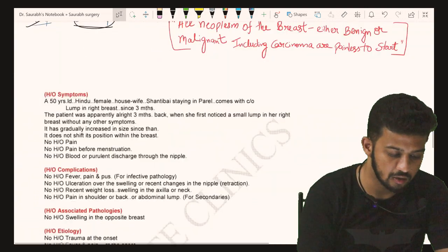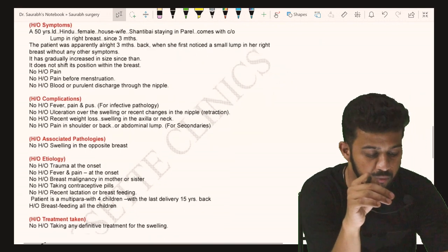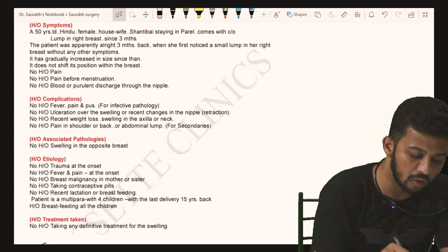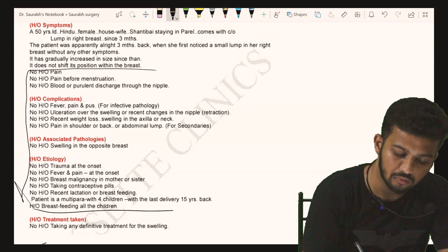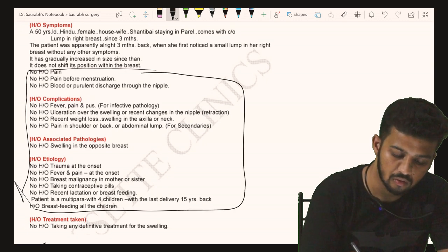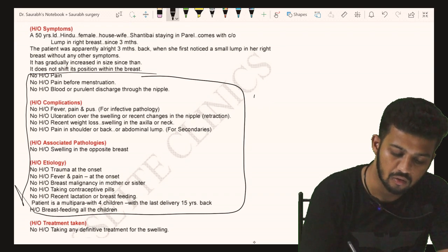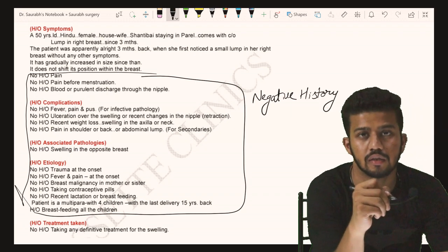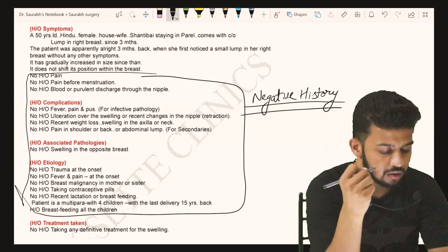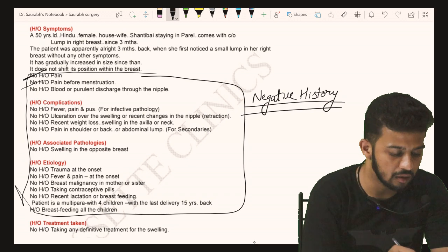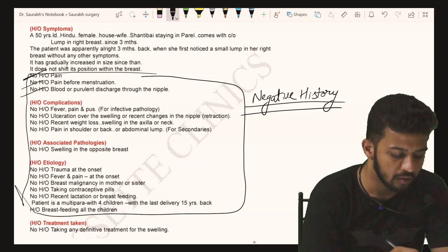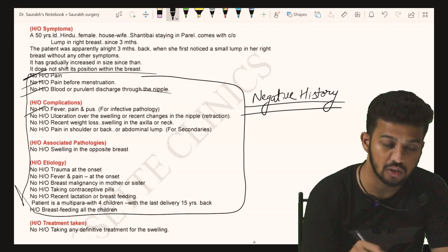For the negative history, we ask about: no pain and no relation of pain with the menstrual cycle; no blood or purulent discharge through the nipple; no fever, no purulent discharge; no ulceration over the swelling or recent changes in the nipple.